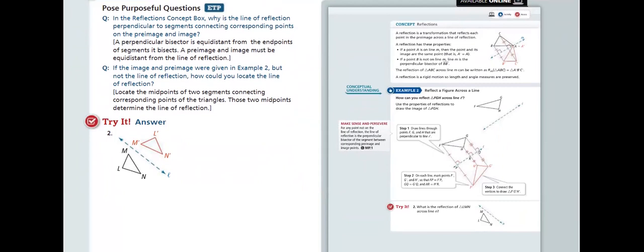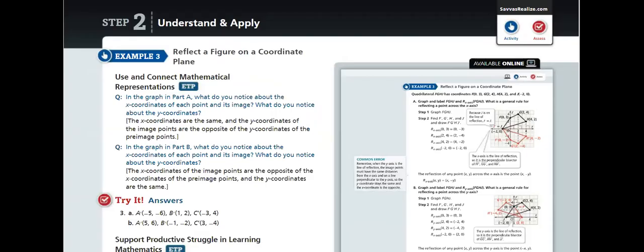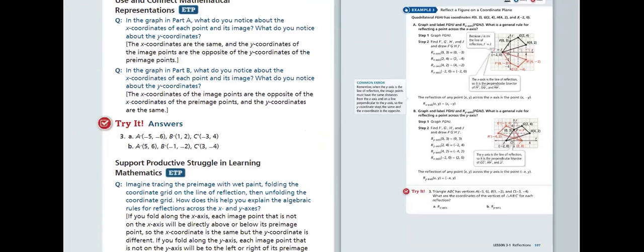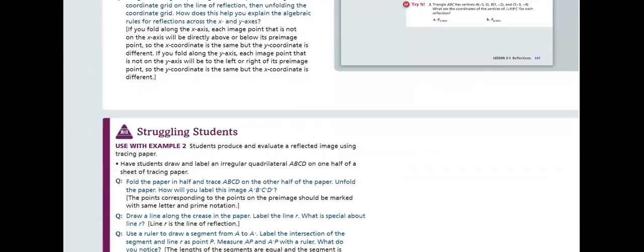We will reflect a figure across a line. Then we will reflect a figure on a coordinate plane. How is that done? And then we will conclude the rule to do so.